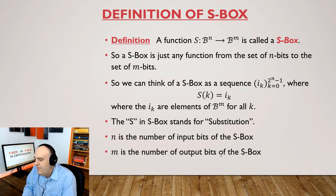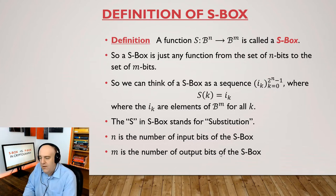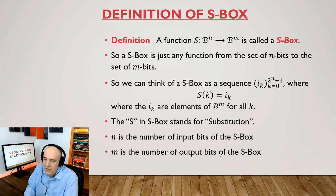And then for each value of K, we just specify the value of S of K and we'll call that IK, I sub K. And I sub K will be elements of BM, so bit sequences of length M. So the S in the S-Box stands for substitution. And N here is the number of input bits and M will be the number of output bits. N could be equal to M, but N could be larger than M or N could be smaller than M.